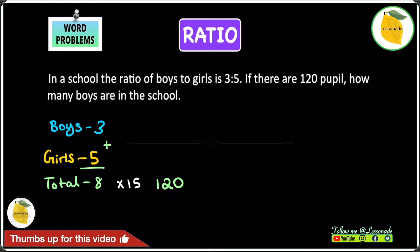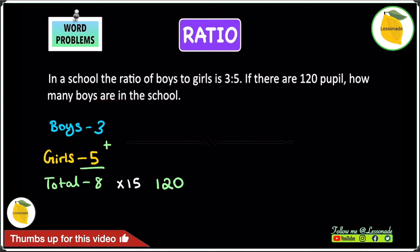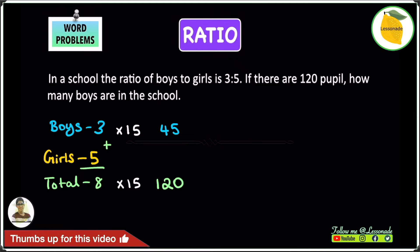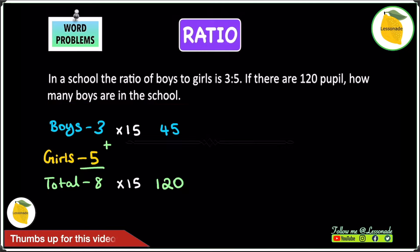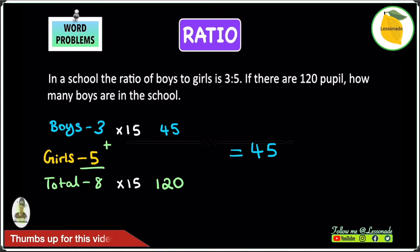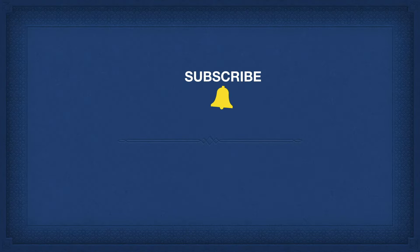Now we multiply 15 by the ratio parts to get the actual numbers of boys and girls. Since the question asks how many boys are in the school, we multiply the boys' ratio value by 15: 3 times 15 gives us 45. We don't need to multiply the girls' value because the question only asks about boys. So the answer to this question is 45 boys.